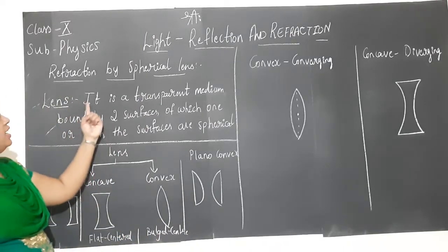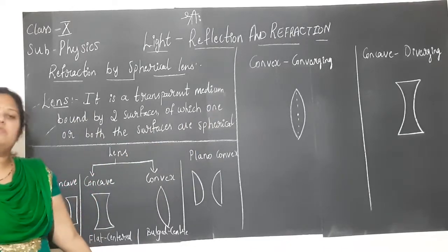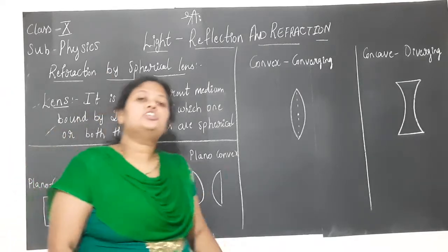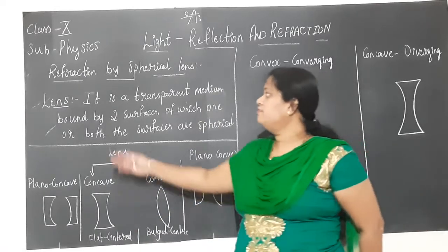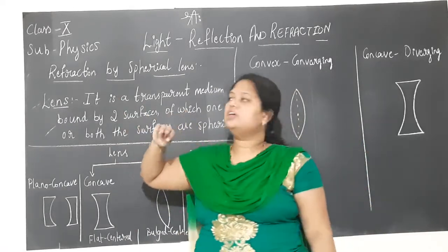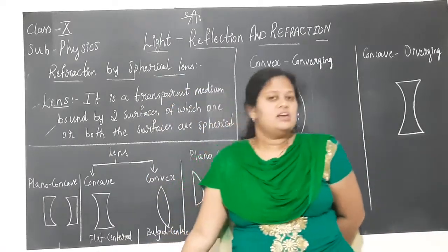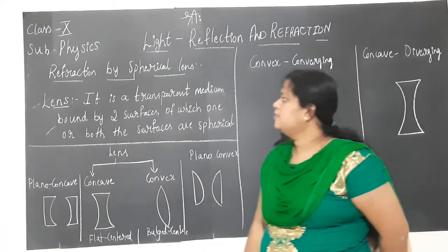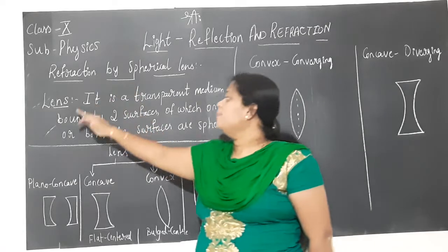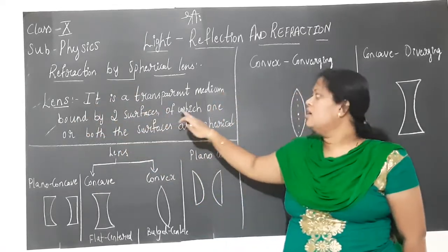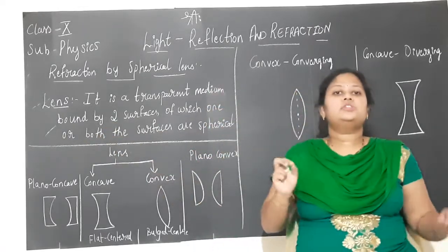What is a lens? It is a transparent medium. We are studying refraction, which involves transparent mediums — so of course, a lens also should be a transparent medium. Glass is a transparent medium. And it is bounded by two surfaces, of which one or both the surfaces are spherical.